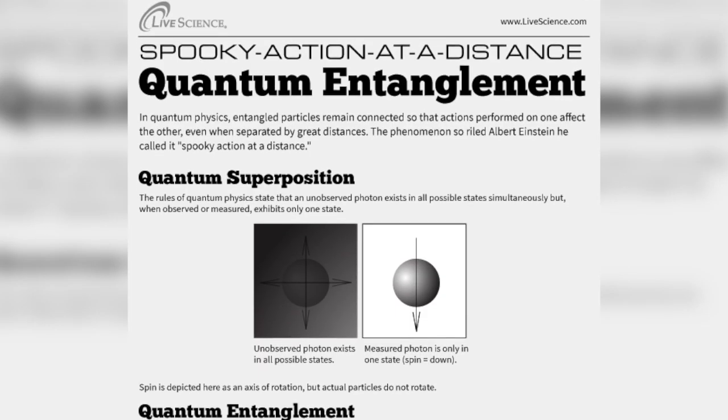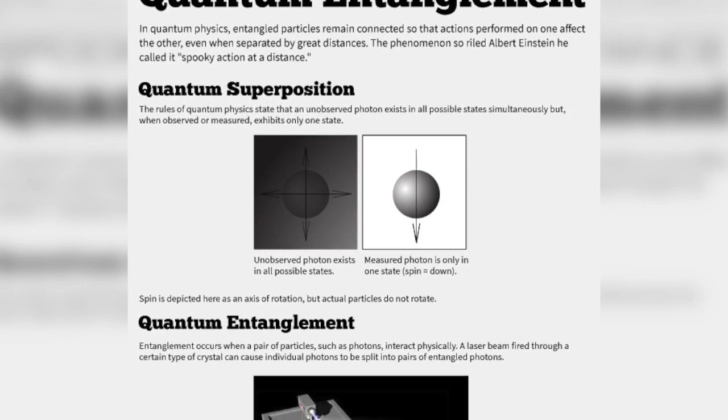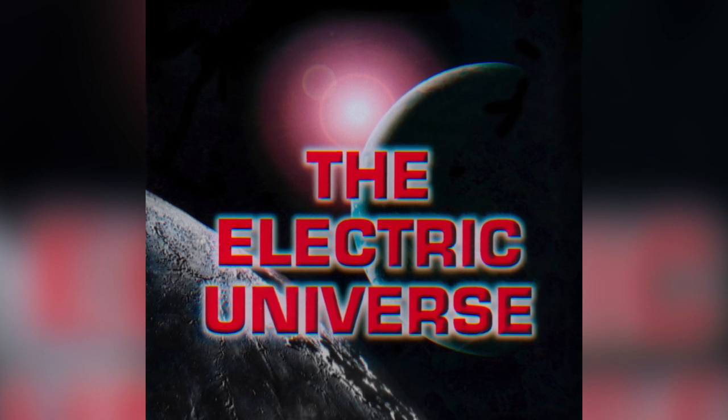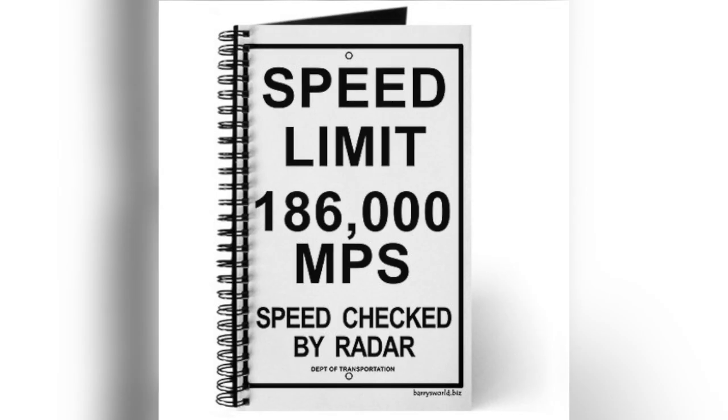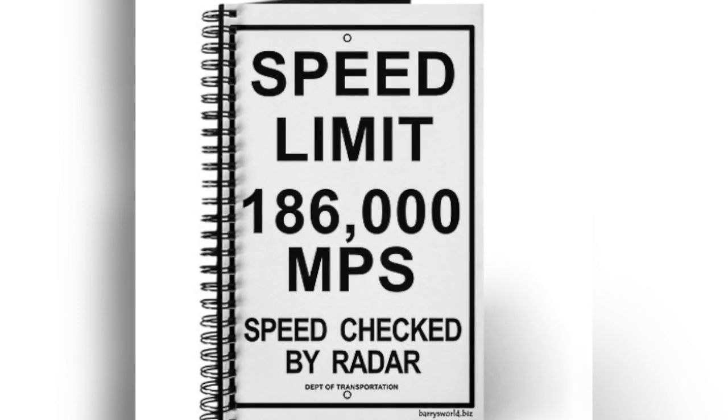Institutional science utilizes terms such as quantum entanglement and spooky action to describe the phenomena. But the Electric Universe theory offers a very different perspective. The speed of light limit to communication imposed by the theory of relativity is not a universal speed limit.